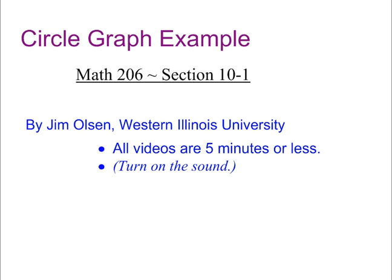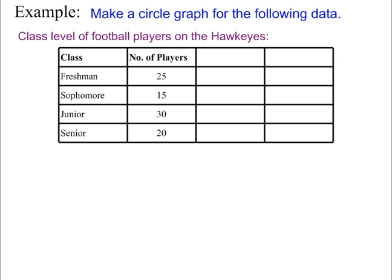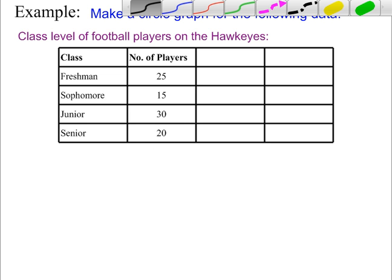Here's our example. Make a circle graph for the following data: class level of football players on the Hawkeyes — freshman, sophomore, junior, senior — and we have the number of players. The first thing you need to do is calculate the total number of players. If we add this up we get 90, so there are 90 players here.